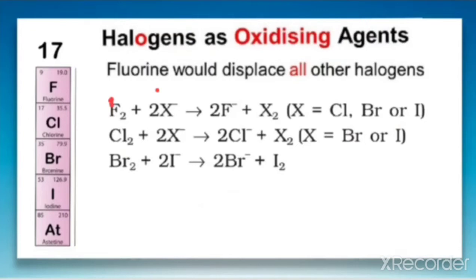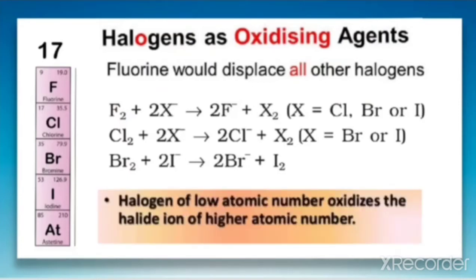Fluorine can displace all halides — chloride, bromide, and iodide. But iodide does not displace the other halides, because fluorine has the strongest oxidizing power and iodine has the weakest oxidizing power.